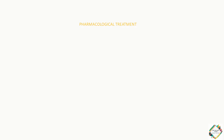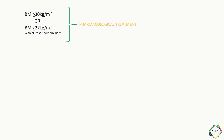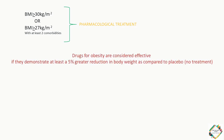So when does a person become a potential candidate for pharmacological treatment of obesity? Those are the individuals whose BMI is greater than 30, or greater than 27 with at least 2 comorbidities, for example hypertension or diabetes. Drugs for obesity are considered effective if they demonstrate at least a 5% greater reduction in body weight compared to placebo.